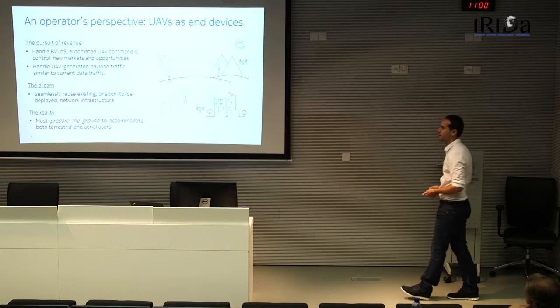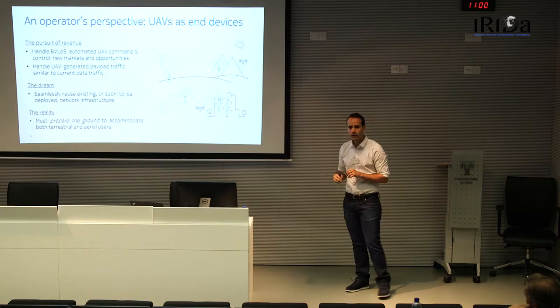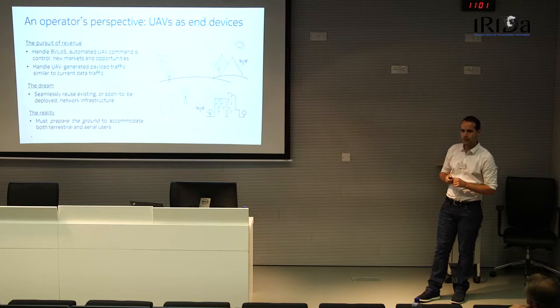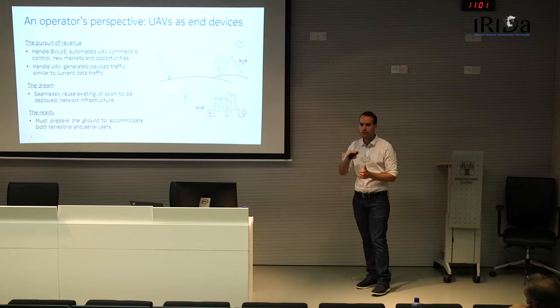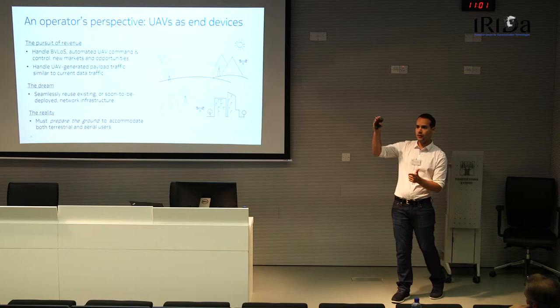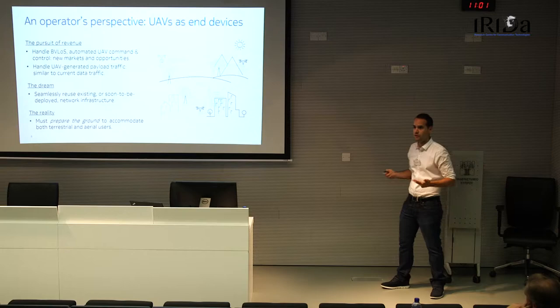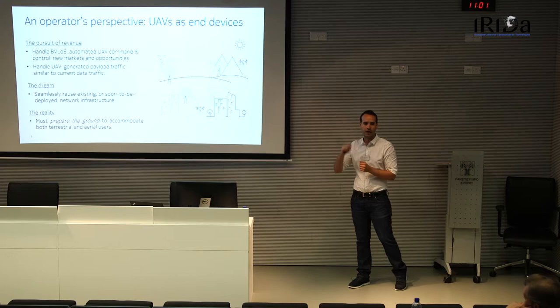The reality is that cellular operators need to prepare the ground to accommodate both terrestrial and aerial users. They must first check if current cellular networks can provide services to UAVs, verify whether doing so affects the performance of existing ground users, and if so, understand how to improve the cellular networks to serve both aerial and ground devices.